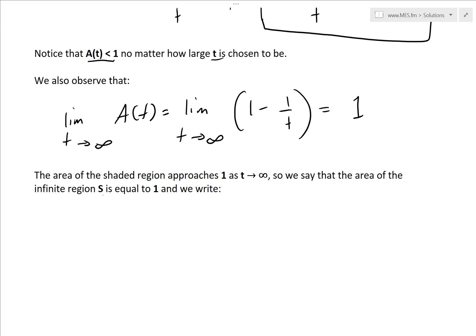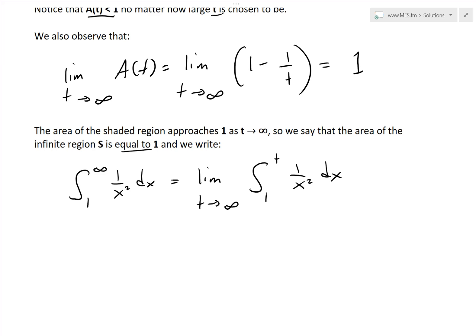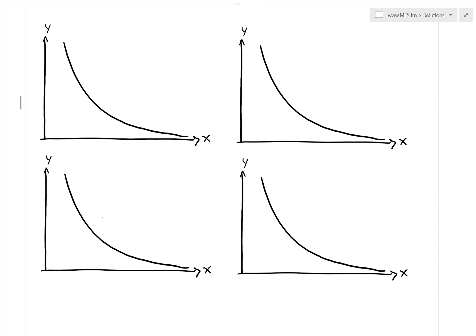So we say that the area of the infinite region is equal to 1. We can now write the integral from 1 to infinity of 1 over x squared dx, and in our case, this equals the limit as T approaches infinity of the integral from 1 to T of 1 over x squared dx, which equals 1. To get a visual understanding of this, let's look at the graph of the 1 over x squared function. Here x equals 1, and let's graph this up to, say, x equals 2.